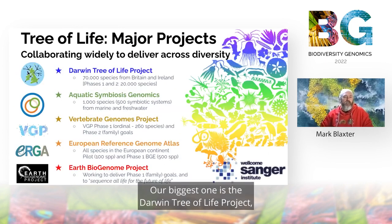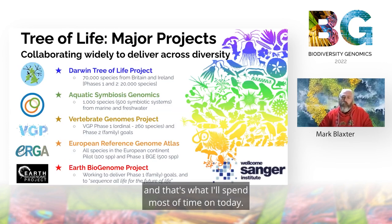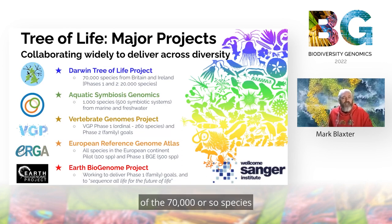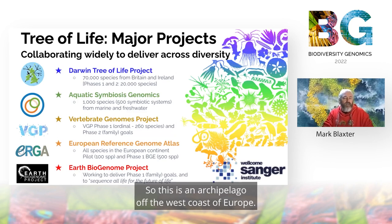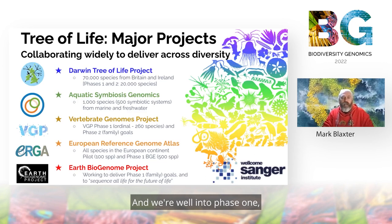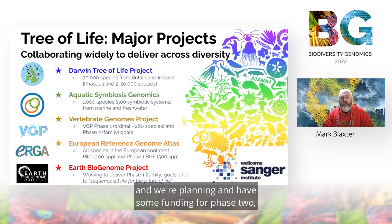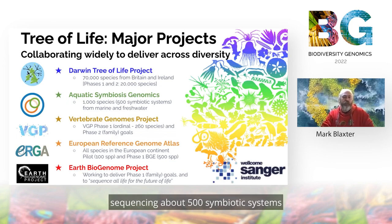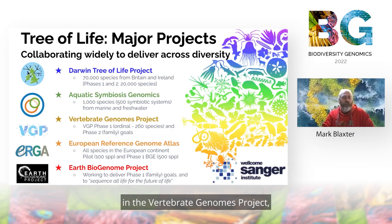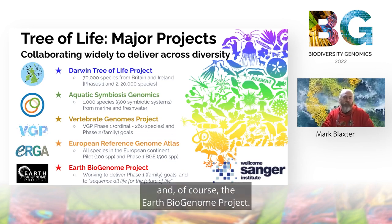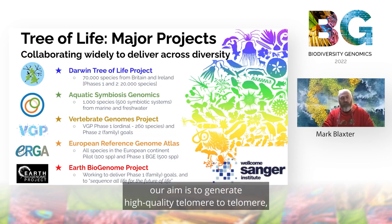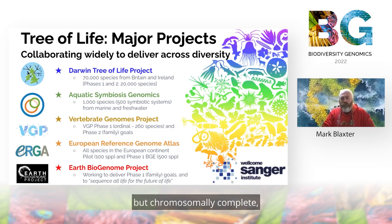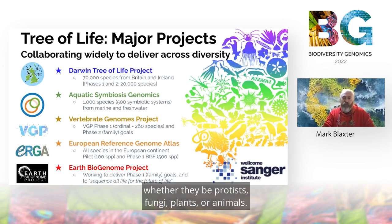Tree of Life is involved in several major projects. Our biggest one is the Darwin Tree of Life Project, where we hope to sequence the majority of the 70,000 or so species that live in and on and around the islands of Britain and Ireland. We're well into phase one and planning phase two — 20,000 species. We also have the Aquatic Symbiosis Genomics Project, which is global, sequencing about 500 symbiotic systems to identify the genomes of hosts and symbionts from marine and freshwater. We're also partners in the Vertebrate Genomes Project, European Reference Genome Atlas, and the Earth Biogenome Project. Our aim across all these projects is to generate high quality, chromosomally complete reference genomes for species whether they be protists, fungi, plants, or animals.